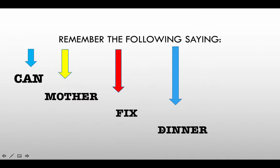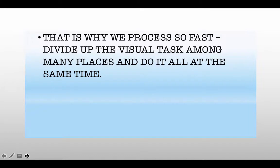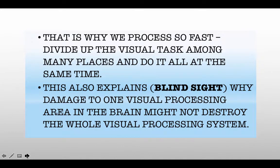Remember the mnemonic: 'Can mother fix dinner?' — each first letter represents one of the aspects of parallel processing: color, motion, form, and depth. So a visual scene is broken up into at least the simple features of color, separate from motion, separate from form, separate from depth. This explains why we can process a visual scene so fast, because we can do many things at once.